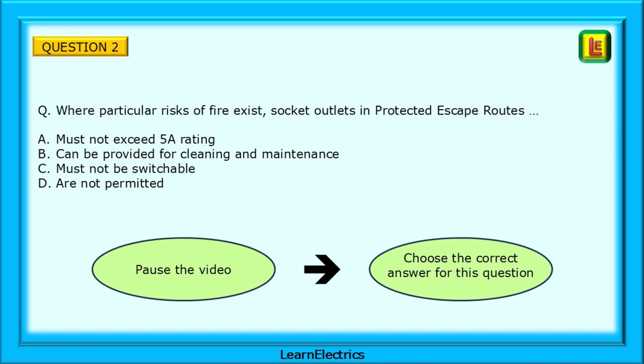For question number 2, we are asked, where particular risks of fire exist, socket outlets in protected escape routes, something. Pause the video, find the key words, and look on page 3 for help.